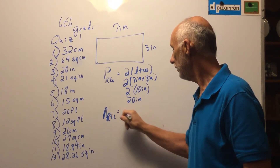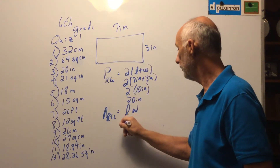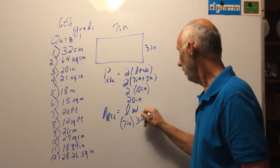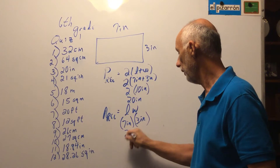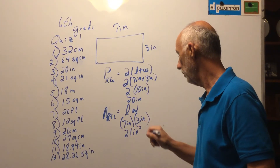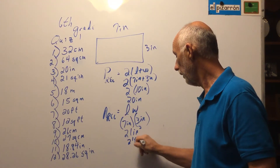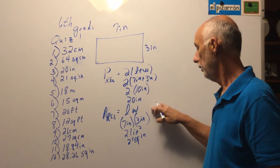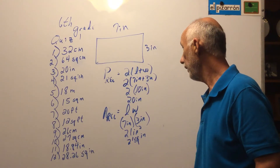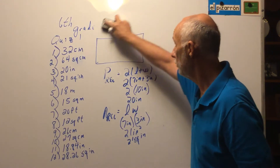The area of a rectangle equals length times width. Replace the length with seven inches and the width with three inches, then multiply: seven times three is 21, and inches times inches is inches squared — so 21 square inches. Formula, replace the variables with their values, get the answer. The perimeter of a rectangle is two times the sum of length plus width; the area is length times width.